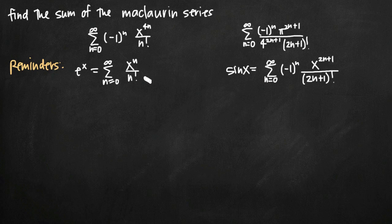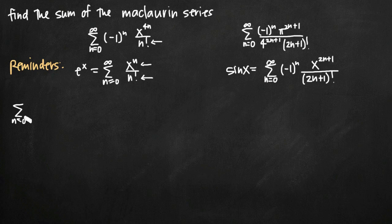Notice that in this well-known series we have n factorial in the denominator, and we already have n factorial in the denominator of our series. In the numerator, the well-known series has x to the n, while ours has x to the four n. So we can actually transform our series: the sum from n equals zero to infinity of negative one to the n, transforming x to the four n into x to the fourth raised to the n power, all divided by n factorial.